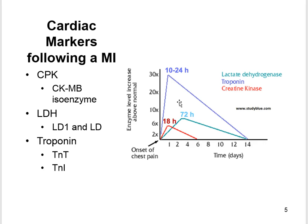Troponin T and Troponin I transmit calcium signals that trigger muscle contraction. Troponin is detectable three to twelve hours post MI, peaks at twelve to twenty-four hours, and remains elevated greater than one week but less than three weeks.